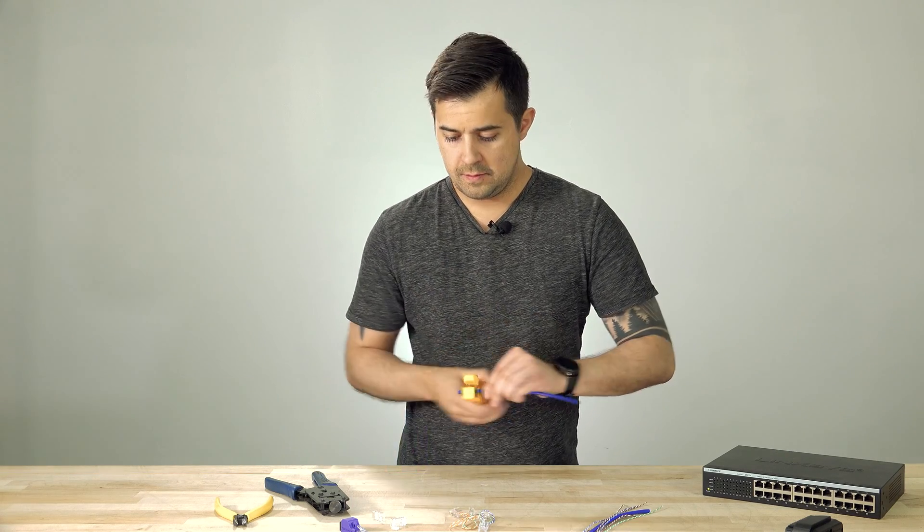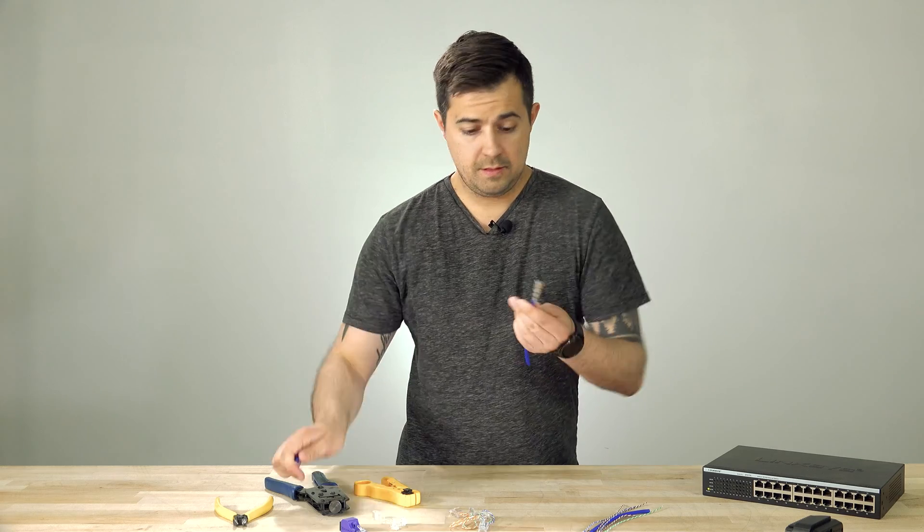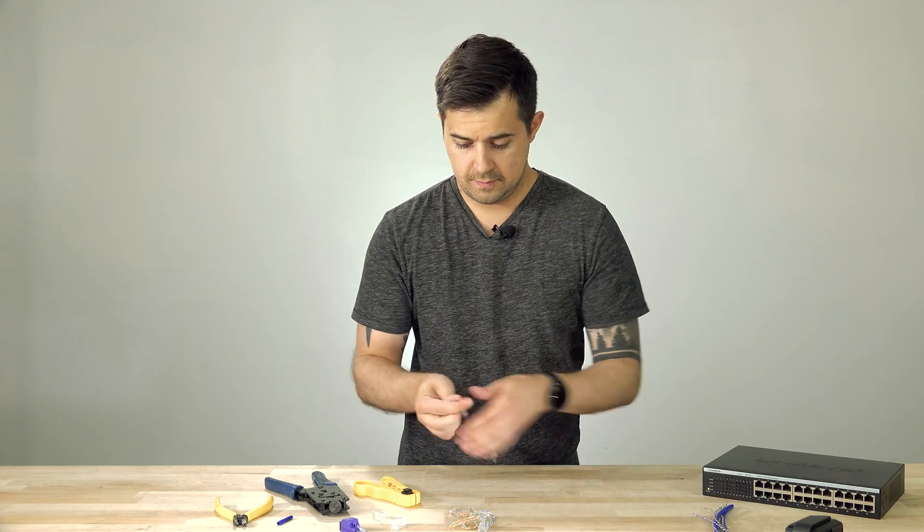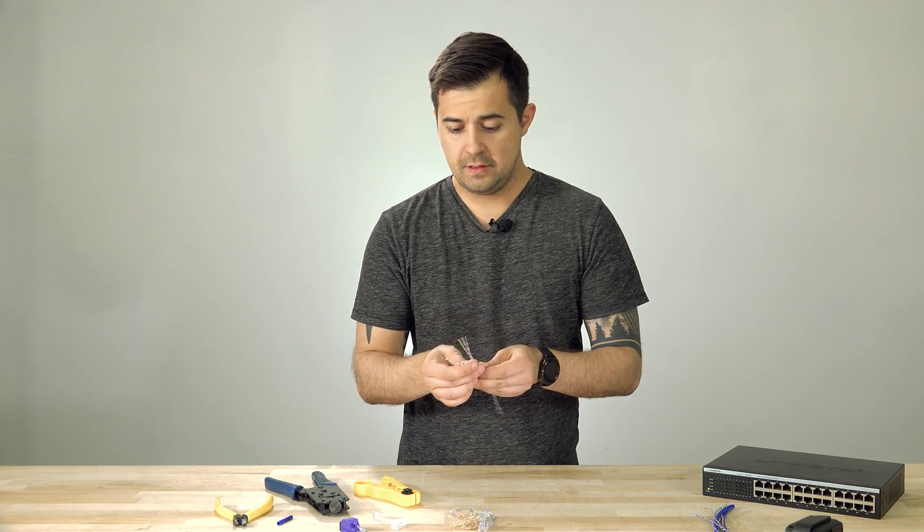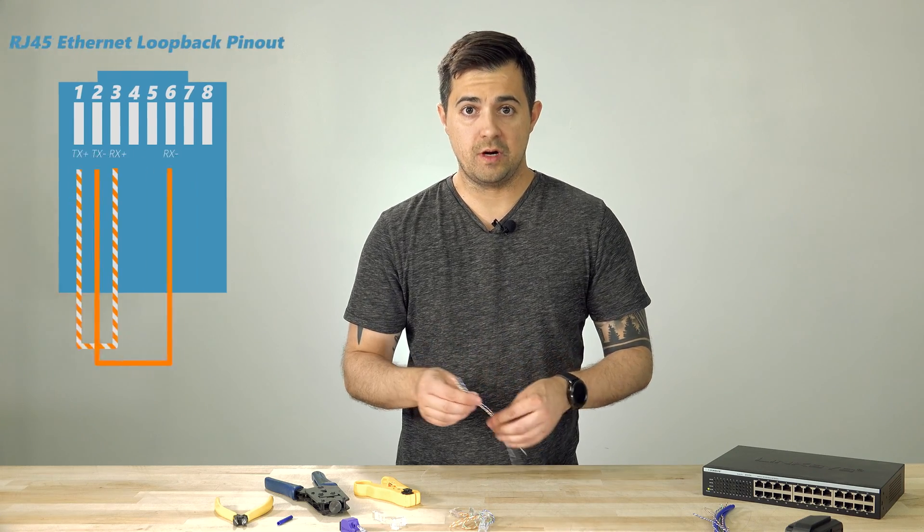So we're going to start by stripping one end to expose the conductors, and we're just going to pull it out. That leaves us with four pairs of the orange, blue, brown, and green wiring.